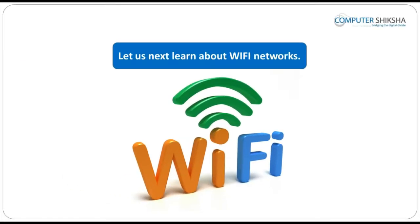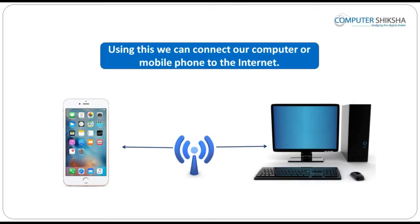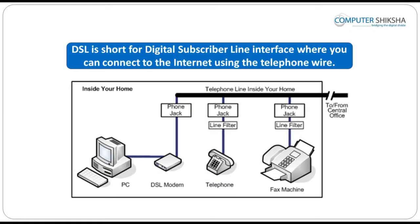Let us next learn about Wi-Fi networks. The full form of Wi-Fi is Wireless Fidelity and using this we can connect our computer or mobile phone to the internet without needing a wire. DSL is short for Digital Subscriber Line, where you can connect to the internet using the telephone wire. This two-wire interface helps us transmit voice and data, so DSL is also an option to connect to the internet.